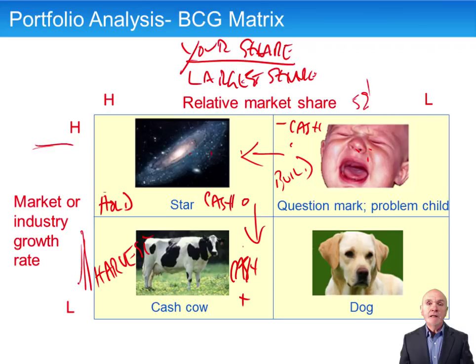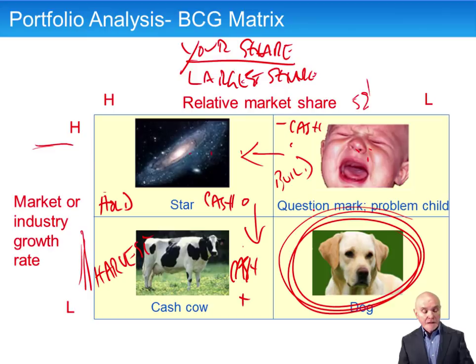The dog product is really a non-starter. It has a low industry growth rate — it was on its way out — and we didn't have a big market share anyway. All you can really do is get out of it as fast as you can — divest.